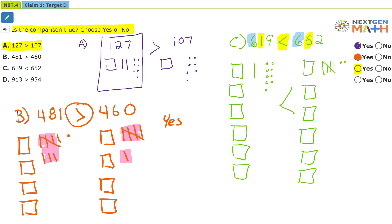Now let's go ahead and do D. D is 913 greater than 934. This time we're just going to focus on the digits and not the drawings.